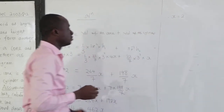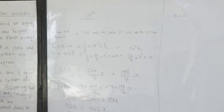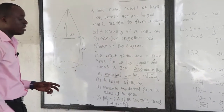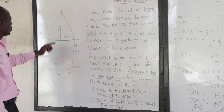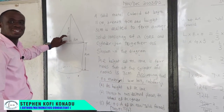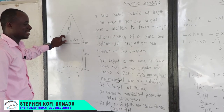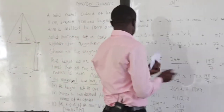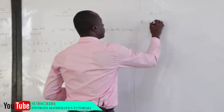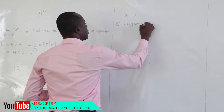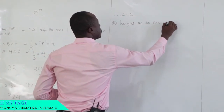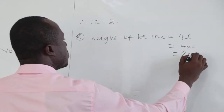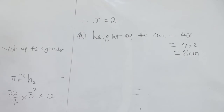Now that x = 2, the question asks for the height of the cone. The height of the cone is 4x. Since x = 2, the height of the cone is 4 × 2 = 8 centimeters.